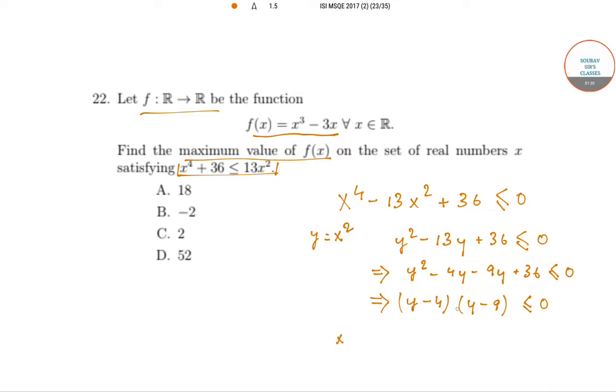So if the product of two things has to be less than equal to 0, one of them has to be negative and one of them has to be positive. Now suppose y minus 4 is negative, which implies x squared is less than equal to 4.